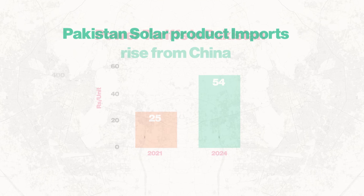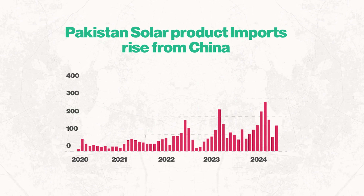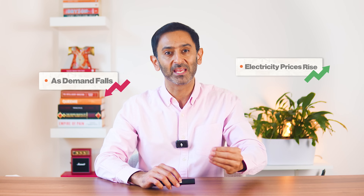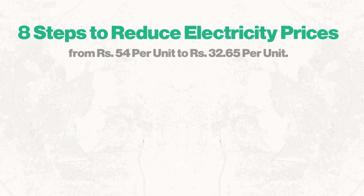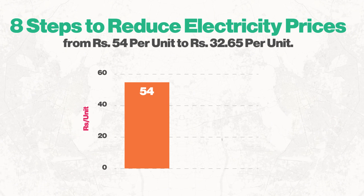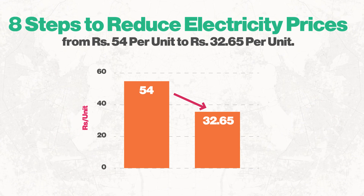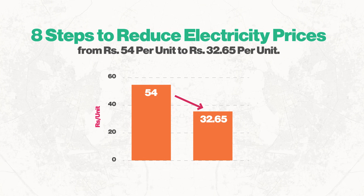On the other hand, because of solar power, thousands of megawatts of solar panels have been imported. And you know that as the grid's demand falls, the excess capacity payments will increase. If you want to revive electricity demand, you will have to reduce electricity rates. In this video, we'll discuss how the bill can be reduced from Rs.56 per unit to Rs.32 per unit — that means Rs.31 per unit.